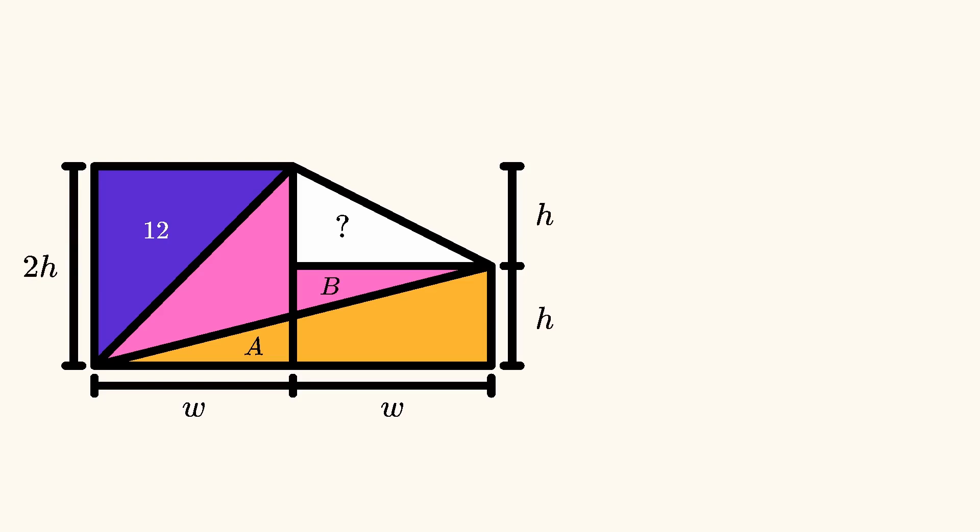Now let's focus on the white triangle, whose area we've been looking for. Its area is 1 half times W times H. The area of the purple triangle, which we know to be 12, is given by 1 half times W times 2H. Putting these equations together, we find that the area of the white triangle is half that of the purple one, namely 6.